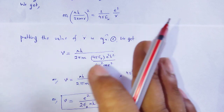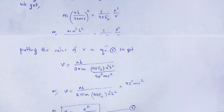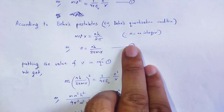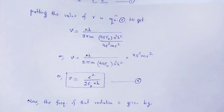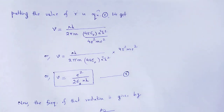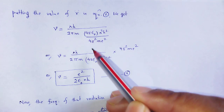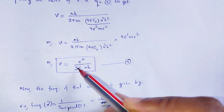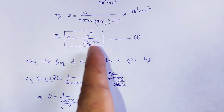Next, we find the value of velocity. We put the value of R into equation number 2. Therefore, we obtain the value of V. Simplifying, we get v = e² / (2ε₀nh). These are the values of R and V.